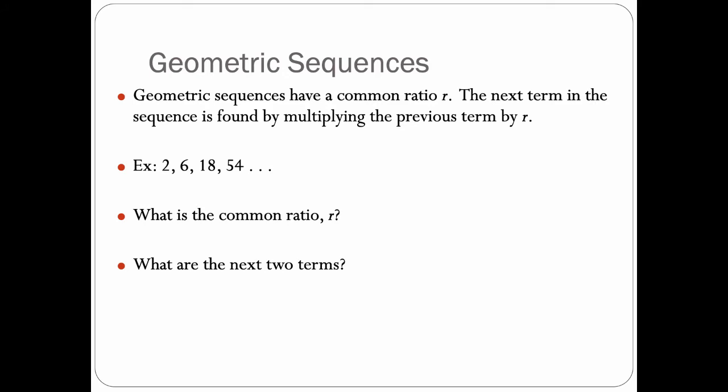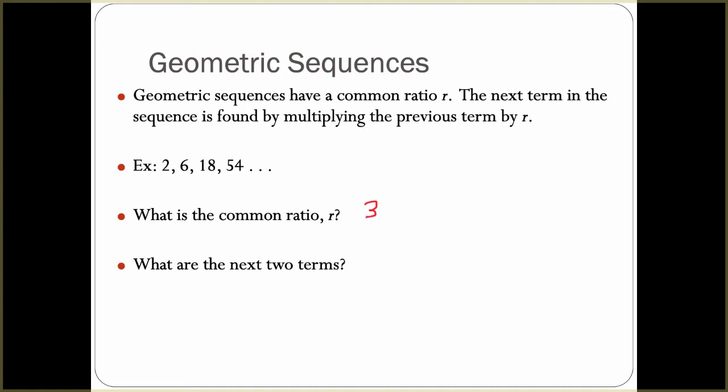If we look at this example, we have 2 goes to 6, goes to 18, goes to 54. We can figure out that the common ratio, every time we go from one number to the next, we are multiplying by 3. So our common ratio is 3.